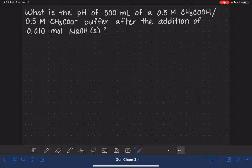In this video, I'm going to walk you through a pretty tricky buffer calculation. In this problem, we have 500 milliliters of a buffer that is made from 0.5 molar acetic acid and 0.5 molar acetate.